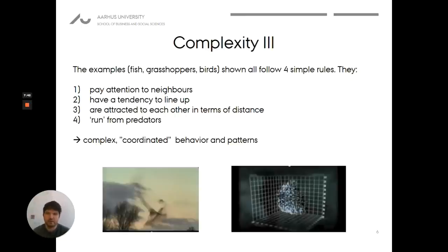As explained by Steven Strogatz, we have a range of different kinds of animals - fish, grasshoppers, birds - that are fairly simple. It does not seem like they would be able to coordinate this very synchronized, almost intelligent behavior. They just pay attention to neighbors, have a tendency to line up, and are attracted to each other in terms of distance, plus the fourth rule of running from predators. But since all these animals follow the same three simple rules, together it looks like a very coordinated system.